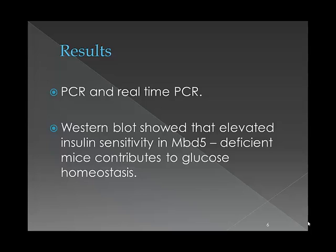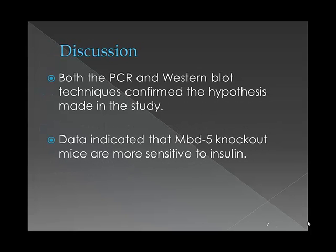Overall, the findings from the Western blot showed that elevated insulin sensitivity in MBD-5 deficient mice contributes to alteration of glucose homeostasis, resulting in hyperglycemia. Improved hepatic insulin sensitivity in the absence of MBD-5 is also confirmed by an increase in AKT activation and phosphorylation, with or without insulin treatment. PCR and Western blot techniques were both very useful for the study, giving reliable results showing that the mutant mice displayed altered glucose homeostasis due to elevated insulin sensitivity.